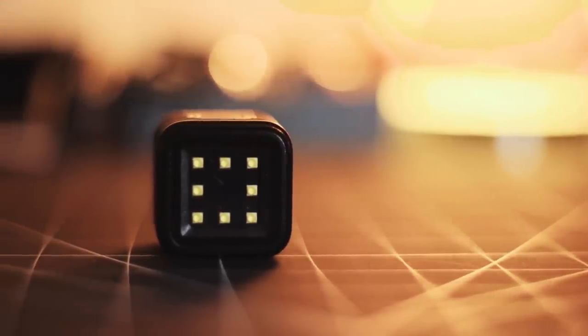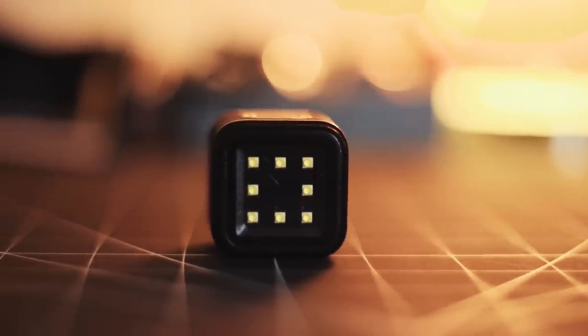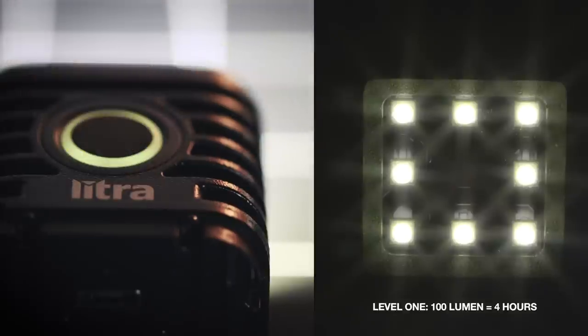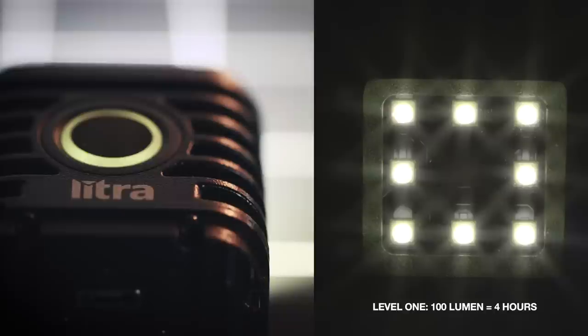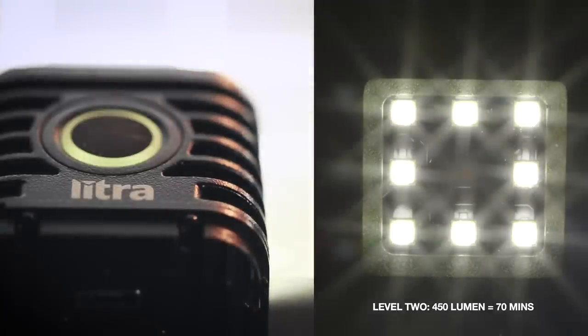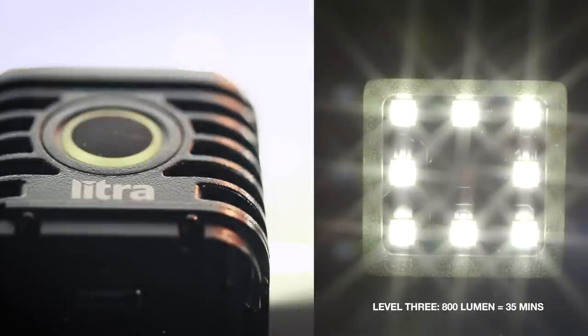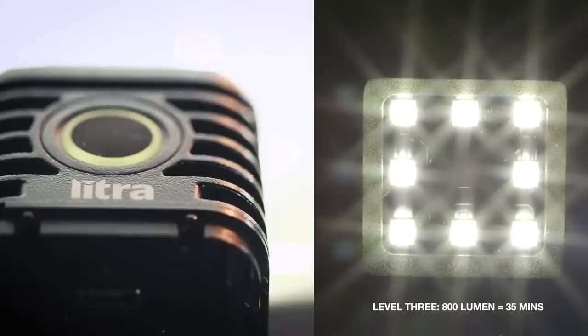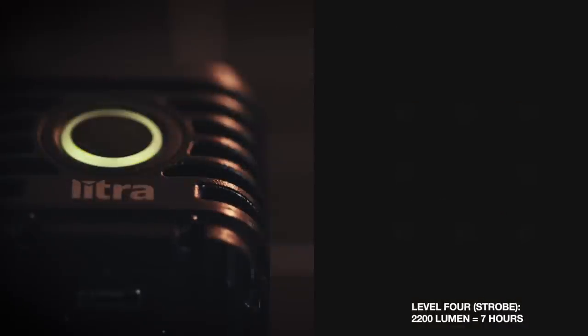On the front of the Litra torch are 8 high powered LEDs that can be operated in 3 different intensities, plus an additional strobe mode. Level 1 at 100 lumens gives you 4 hours of endurance. Level 2 at 450 lumens gives you 70 minutes of endurance. And level 3 at 800 lumens gives you 35 minutes of endurance on a single charge. There's also a 4th strobe mode at 2200 lumens, and can last for 7 hours.